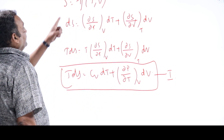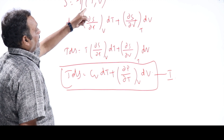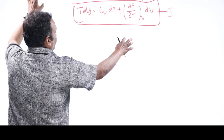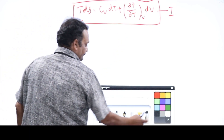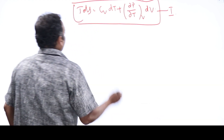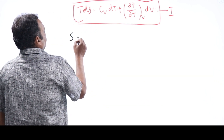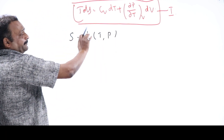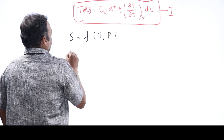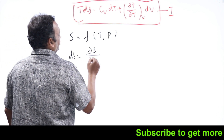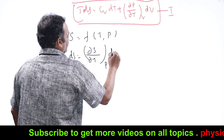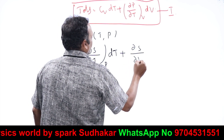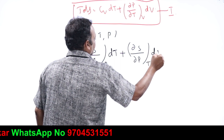To obtain the second TDS equation, take entropy as a function of temperature and pressure. Differentiating: dS = (∂S/∂T)ₚ dT + (∂S/∂P)ₜ dP. Multiplying both sides by T: TdS = T·(∂S/∂T)ₚ dT + T·(∂S/∂P)ₜ dP. The term T·(∂S/∂T)ₚ = (∂Q/∂T)ₚ = Cp, the molar specific heat at constant pressure. So TdS = Cp·dT + T·(∂S/∂P)ₜ dP.